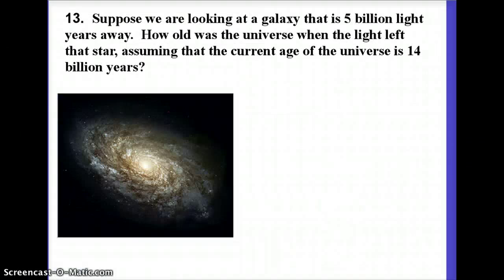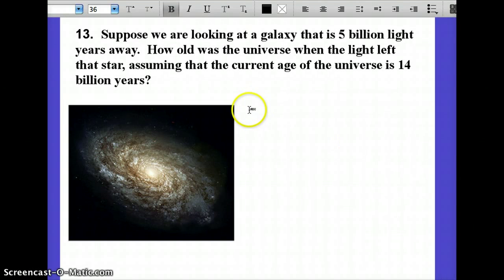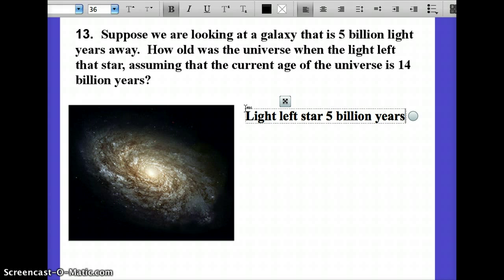So, let's take an example. This is number 13 in your packet. I've got a galaxy here. And I'm saying, imagine that it's 5 billion light years away. The one in this particular picture is not. This one's about 60 million light years away. But, let's pretend we've got one that's 5 billion light years away. And I'm asking you, how old was the universe when the light left that star? Assuming that it is currently 14 billion years. Well, the first thing we need to know is, when did that light leave the star? Well, it's 5 billion light years away. So, the light left the star 5 billion years ago.